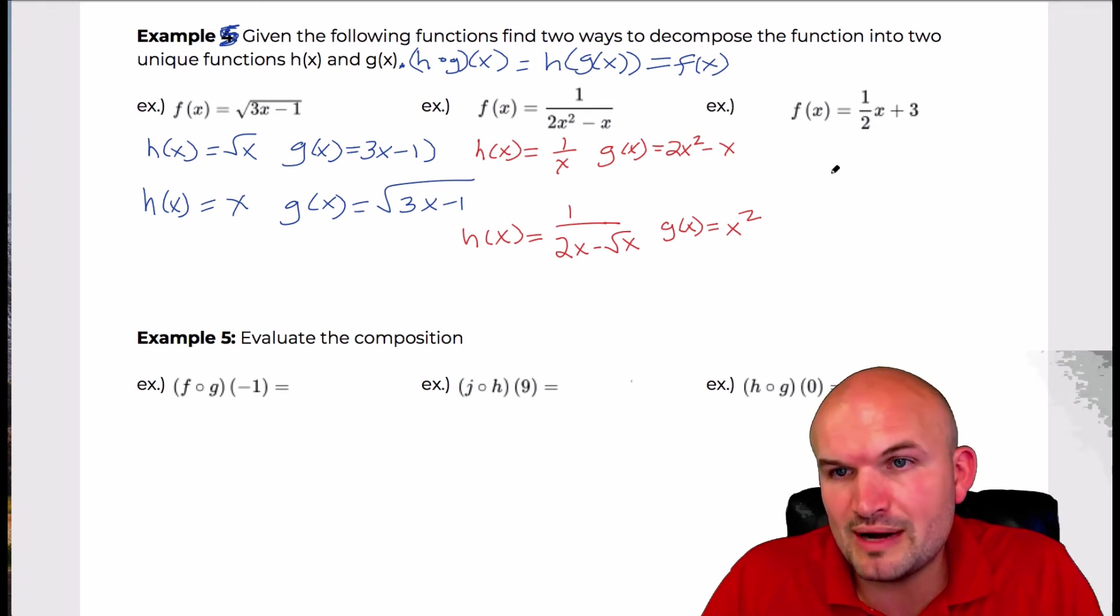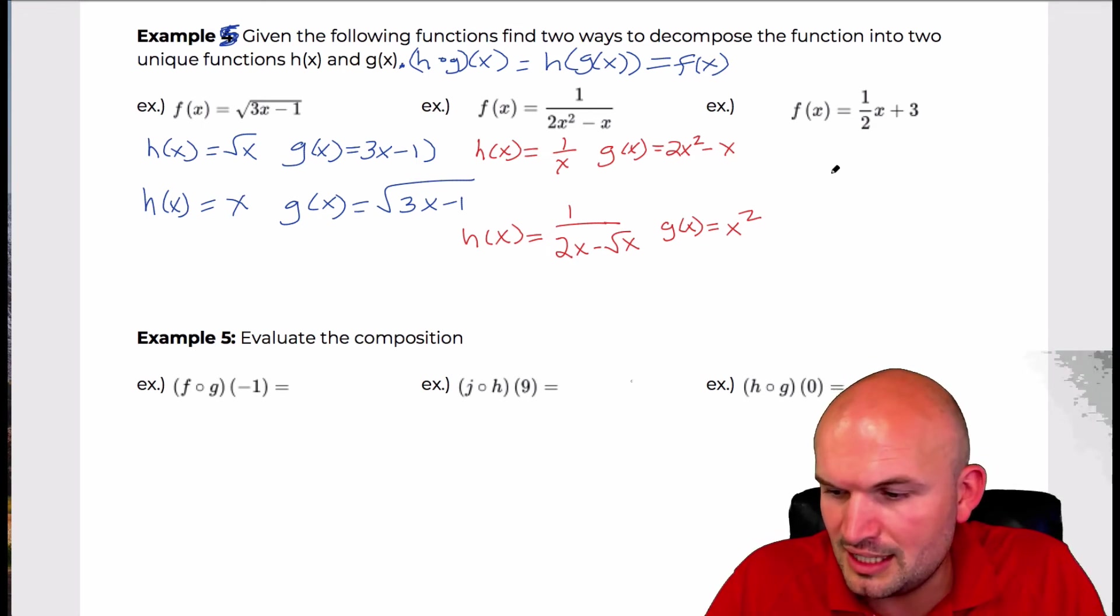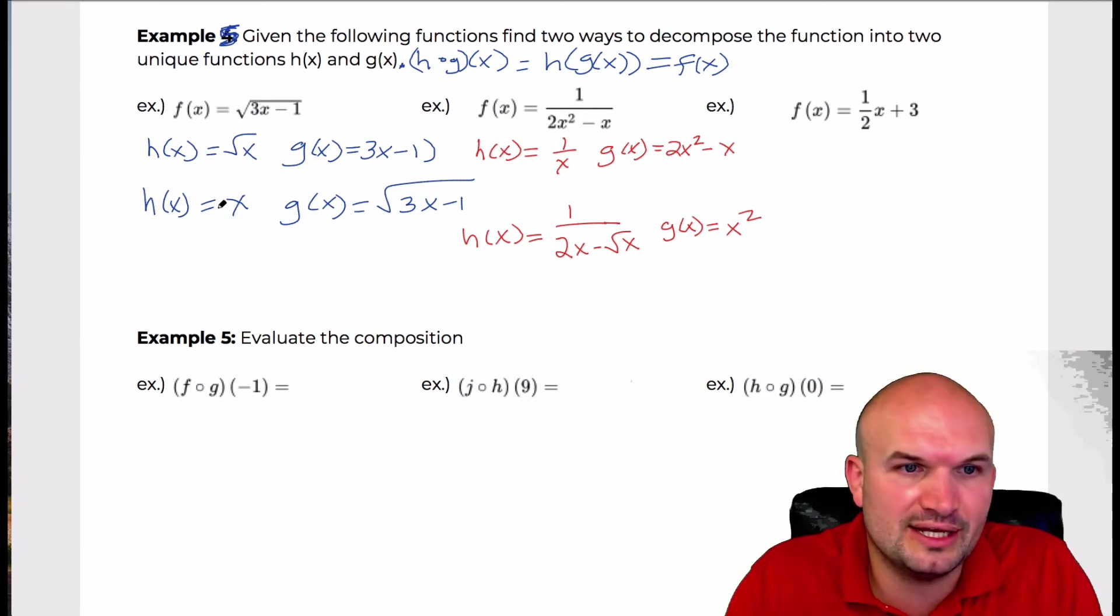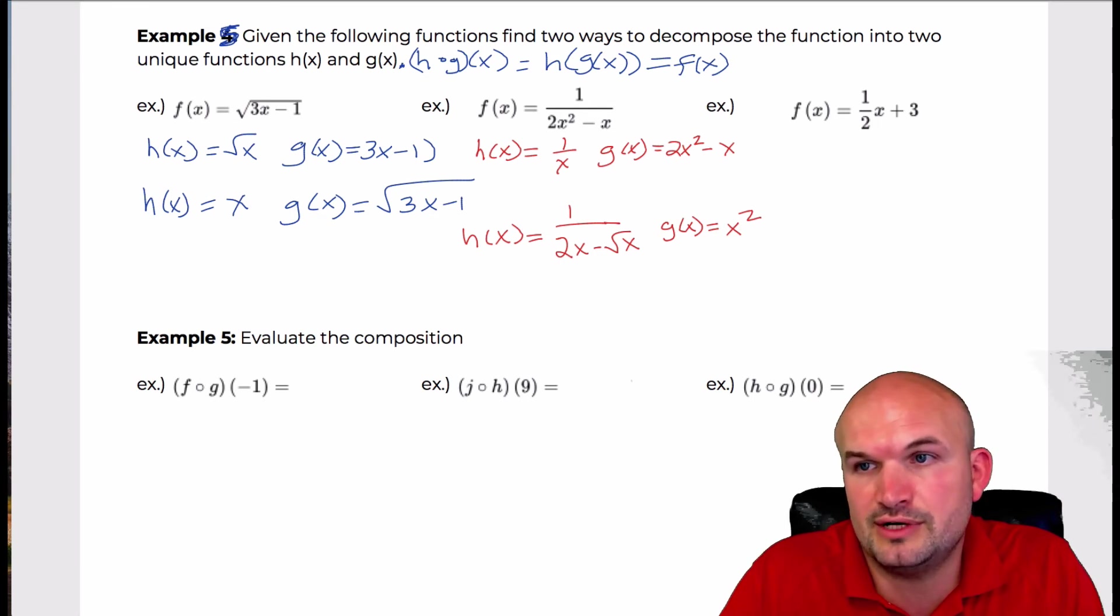So next one, f of x equals 1 half x plus 3. We could do this a couple of different ways. We could plug in x and then plug in that function. Or we could also just say, let's say h of x equals 1 half x plus 3. And then really a non-creative way would just say, all right, well, let's make g of x then equal x.